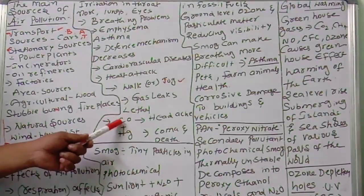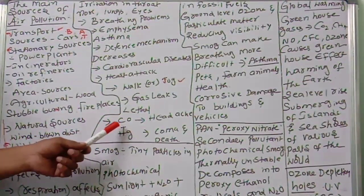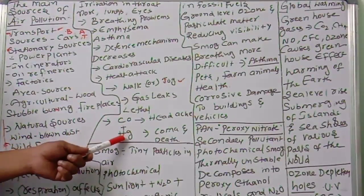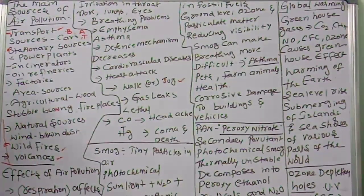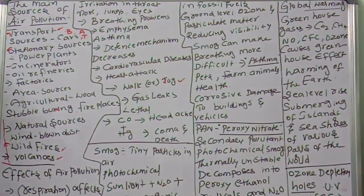Carbon monoxide disturbs oxygen transportation in our body because it occupies the binding position of hemoglobin. Controlling air pollution is everyone's responsibility, otherwise it leads to the death of living organisms.